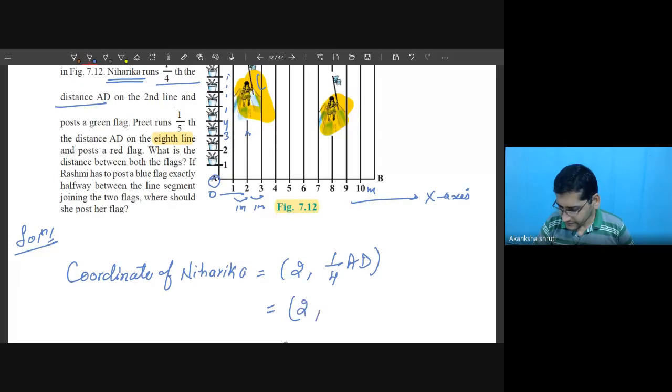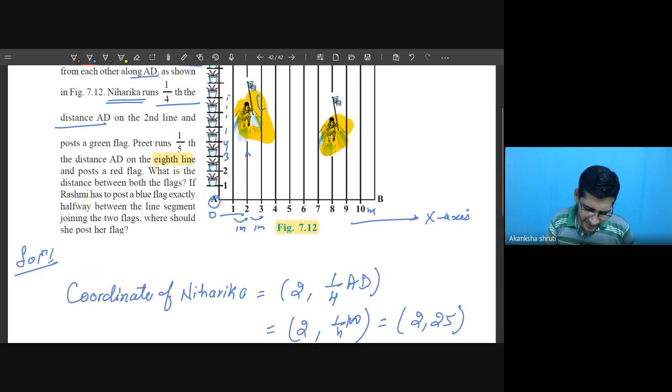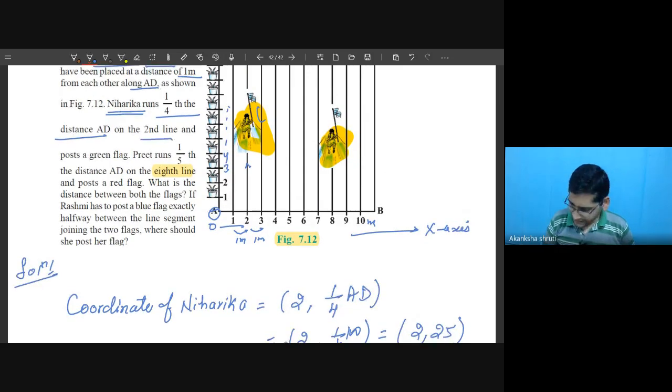Now y coordinate is one-fourth of AD. It is given that this AD is 100, so one-fourth of 100 ultimately becomes 25. This is the second line that we have used.